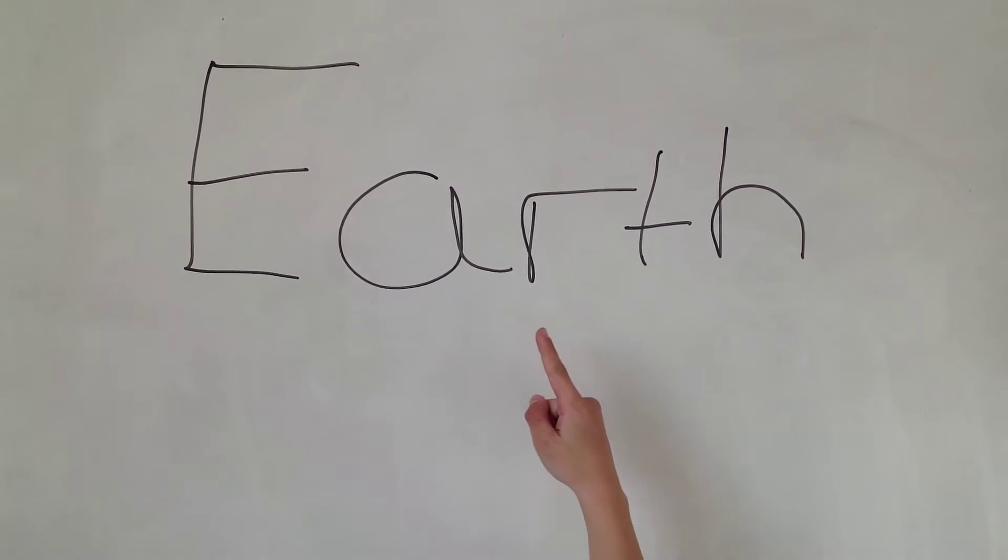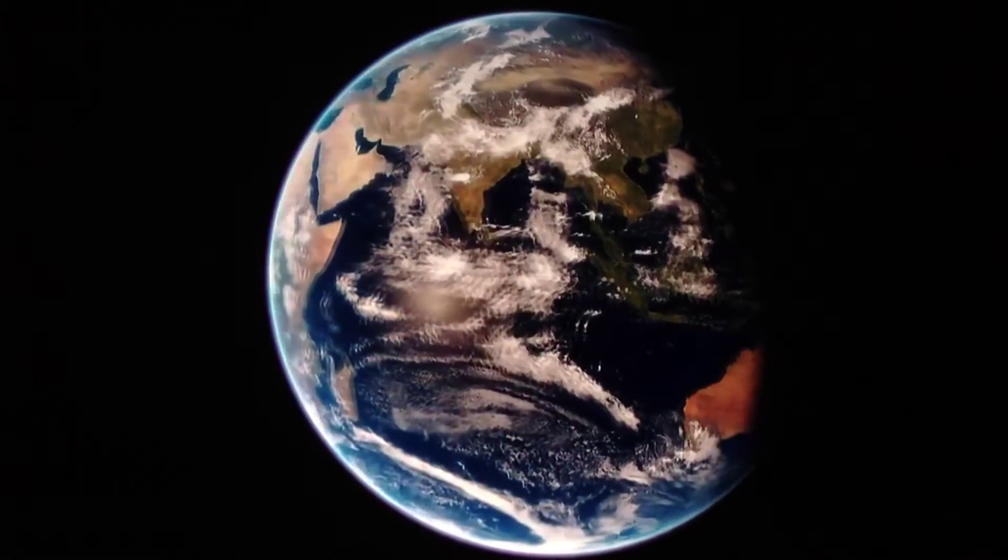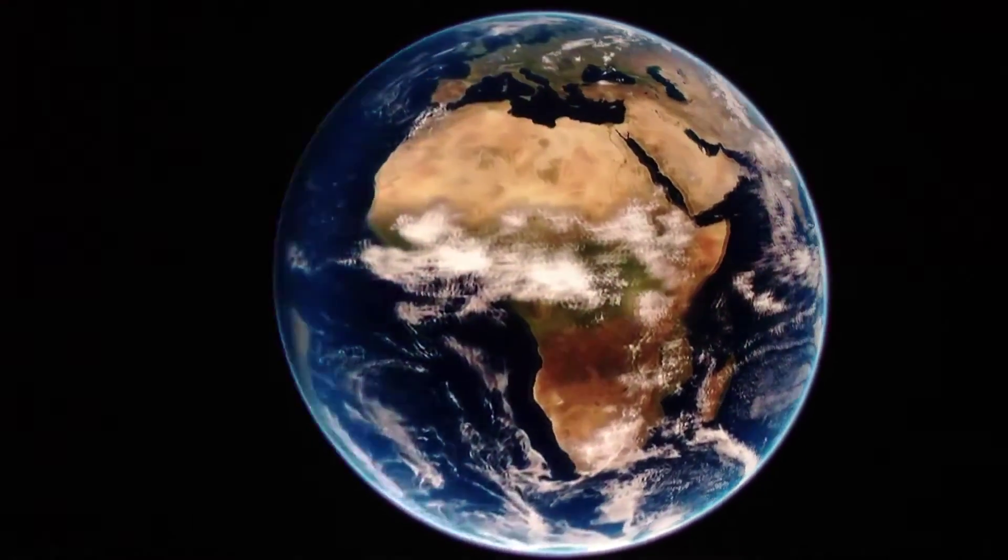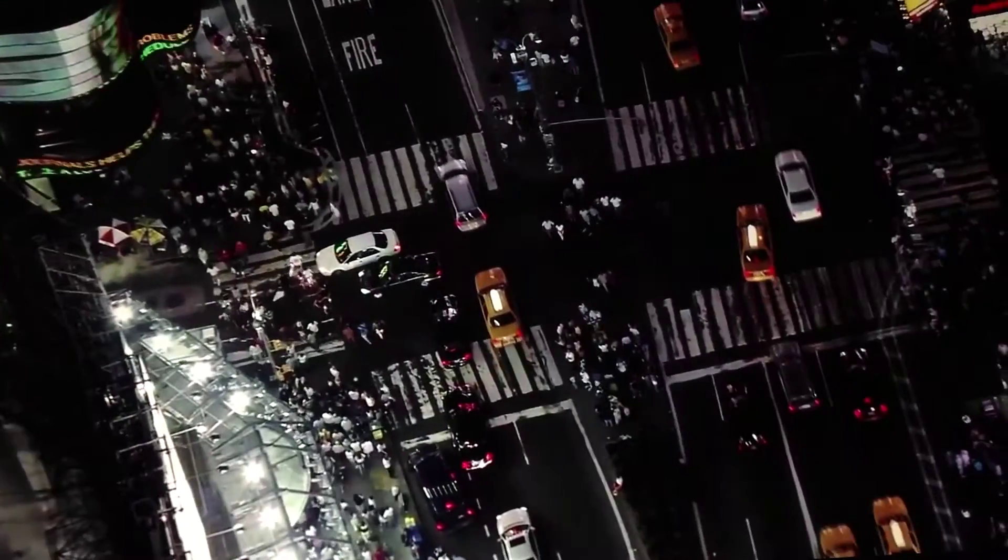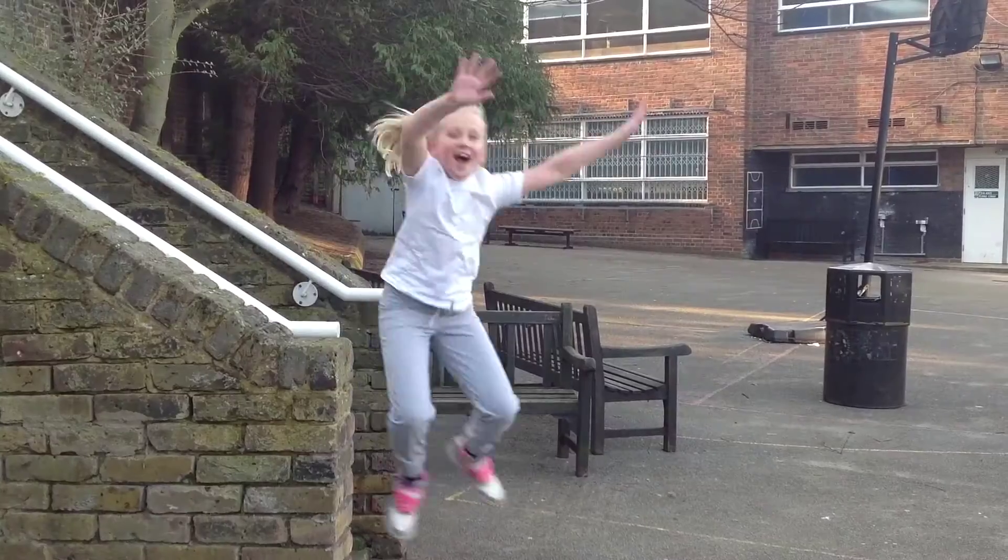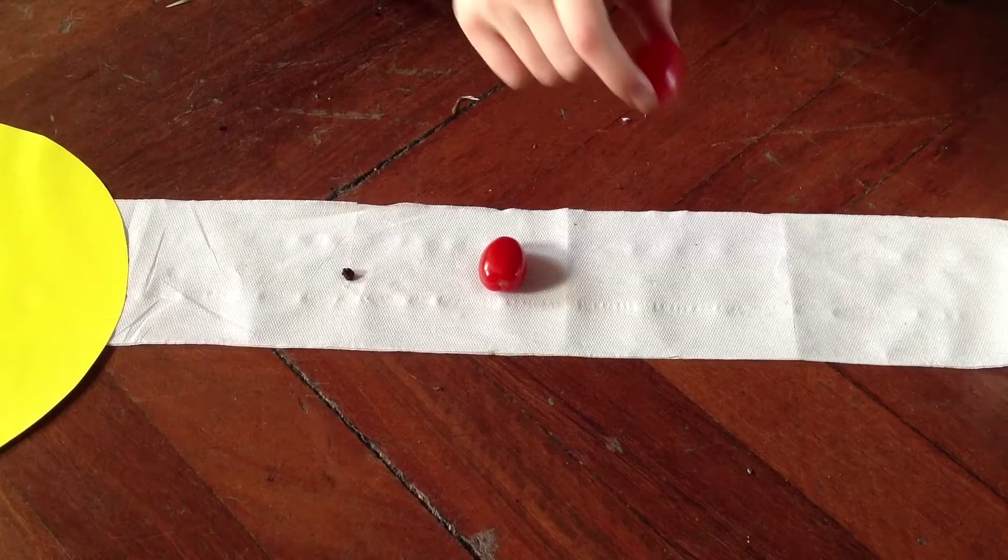Earth. Scientists call Earth a Goldilocks planet. It's not too hot, not too cold and the amount of water is just right. It's the only planet certain to contain life. Earth would go here.